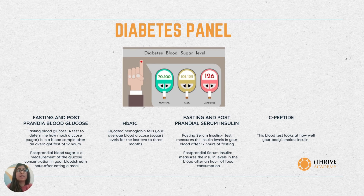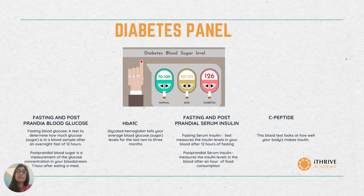Fasting serum insulin is a test that measures the insulin level in your blood after 12 hours of fasting. Post-prandial serum insulin, also known as PP serum insulin, measures the serum insulin level in blood after an hour of food consumption. Lastly, C-peptide is a blood test that looks at how well your body is making insulin.